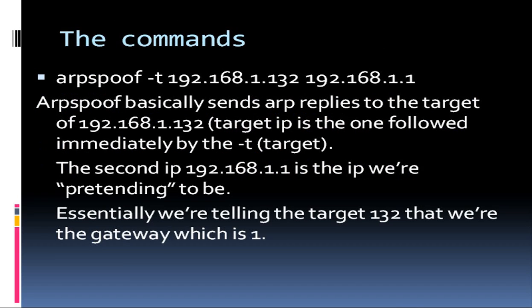Next, we did ARP spoof. This is how we ARP spoof 132, which is the victim, and we make the victim think that we're the gateway. We're basically sending ARP replies to the target at 192.168.1.1, saying that address is at the MAC address of our Linux machine. If that's confusing, go back and look at the first man-in-the-middle video. Essentially, we're telling the target that we're the gateway, which is part of the equation here.